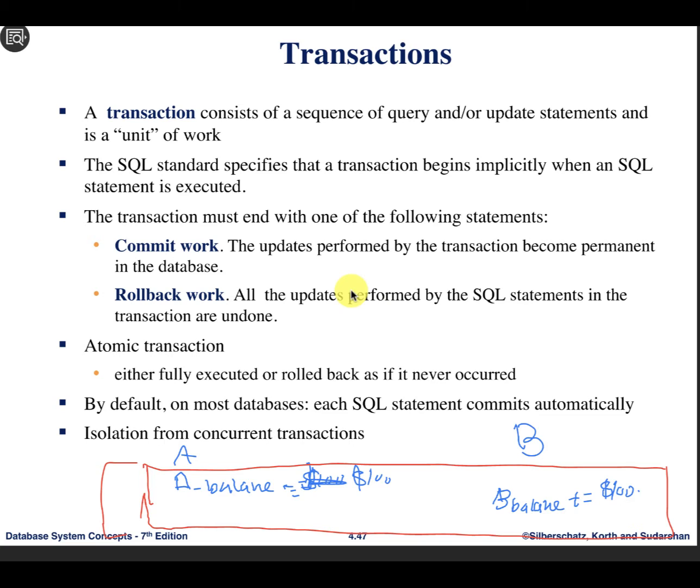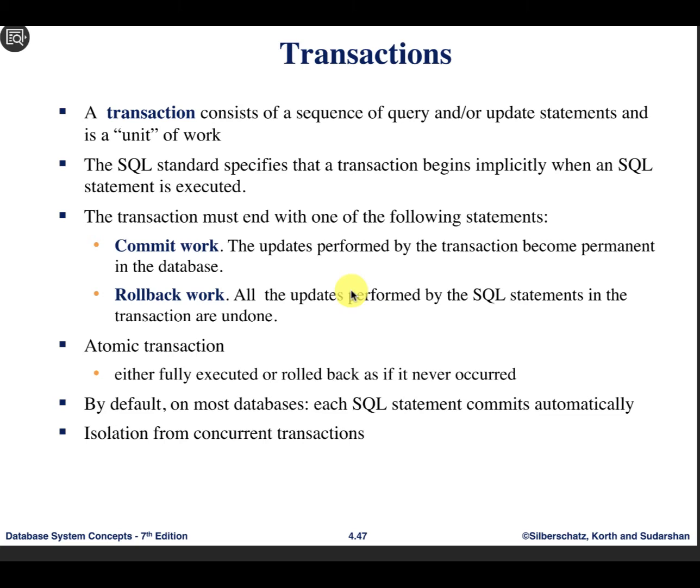How can you tell the database management system that from this point to this point this is one unit — either execute as one unit or none at all? Generally speaking, the SQL standard allows you to define a transaction or block of operations. You can specify, for example, BEGIN TRANSACTION.